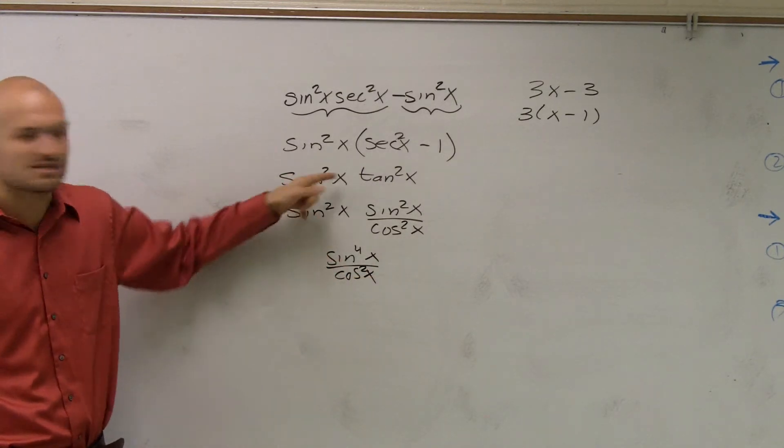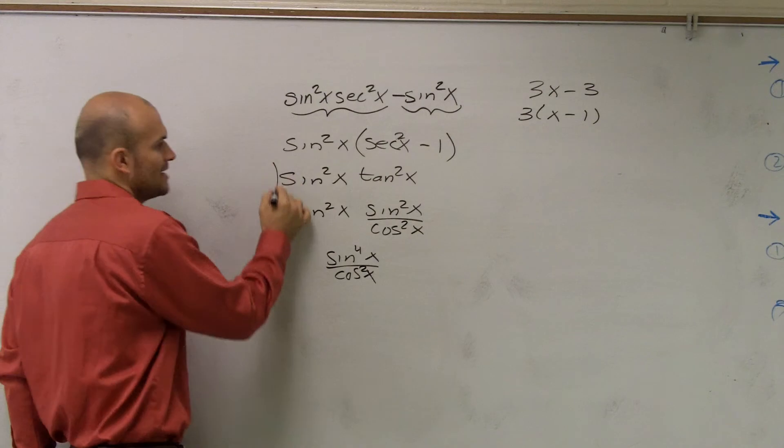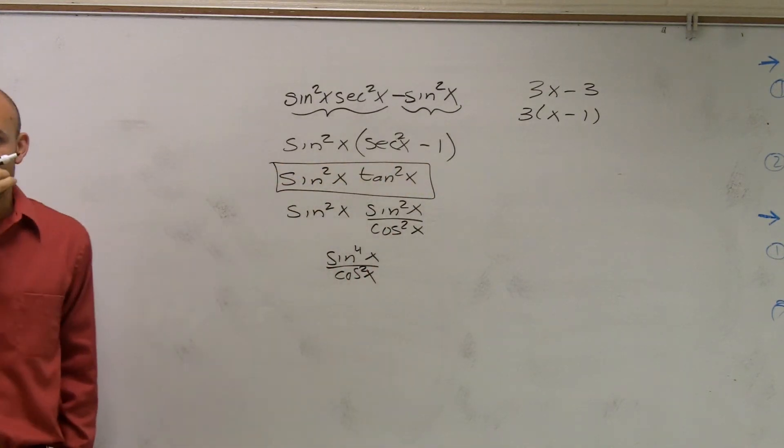So what you'd be left with is sine to the fourth of x over cosine squared of x. Well, that's really not more, this isn't more simple than this, right? So that's why I just leave your answer as sine squared of x times tangent squared of x.